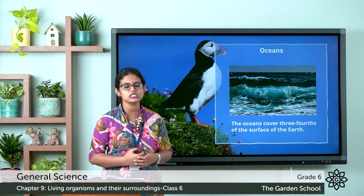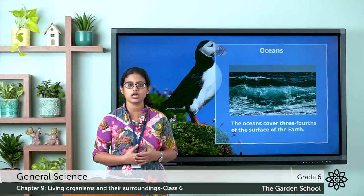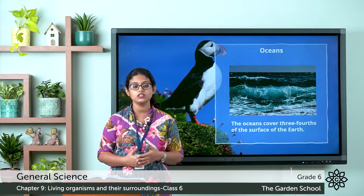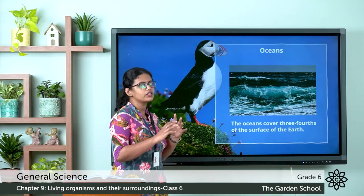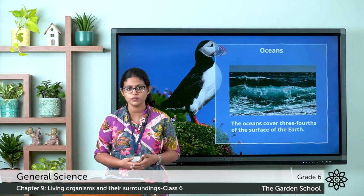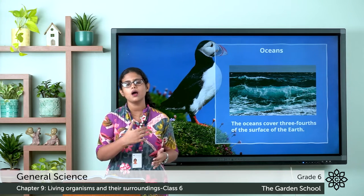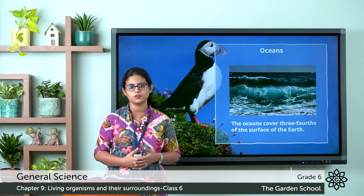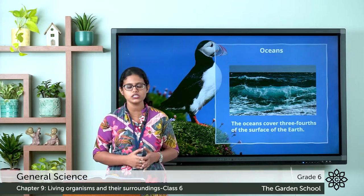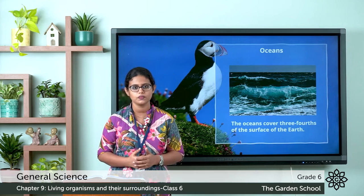Next we are going to discuss about oceans, which is also another saltwater habitat. The ocean covers three-fourths of the earth's surface. Oceans are located in different parts of the earth and have different environments. The oceans in the tropical region have warm water, while the oceans in the polar region have ice cold water.